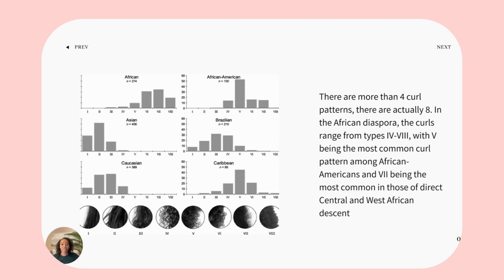I tell my patients that those with a curl pattern between 6 and 8 are at the highest risk for breakage, especially in its natural state. This is because there are more curls and twists along the hair strand, the hair becomes dry very easily, and it requires constant moisturization.